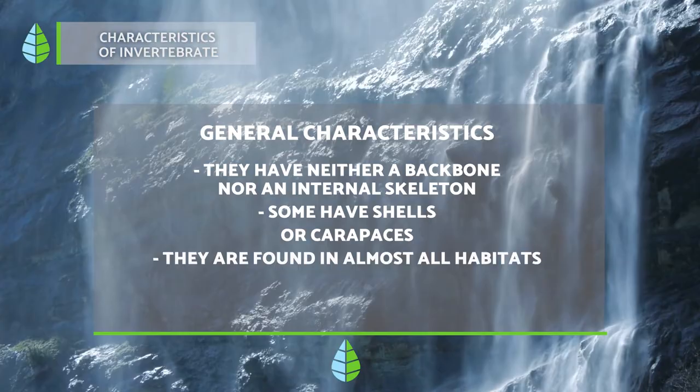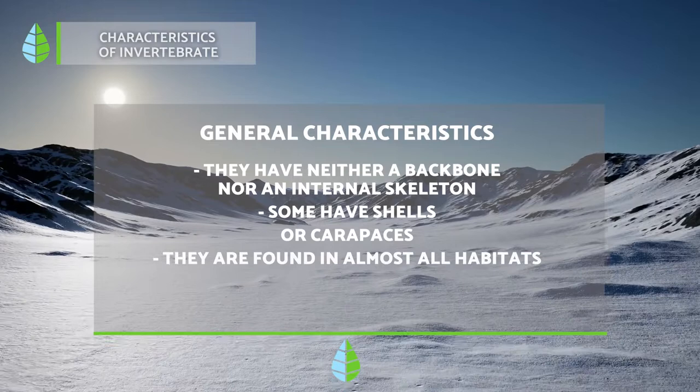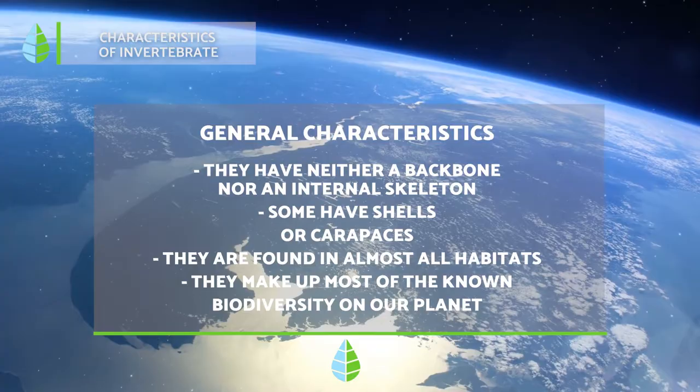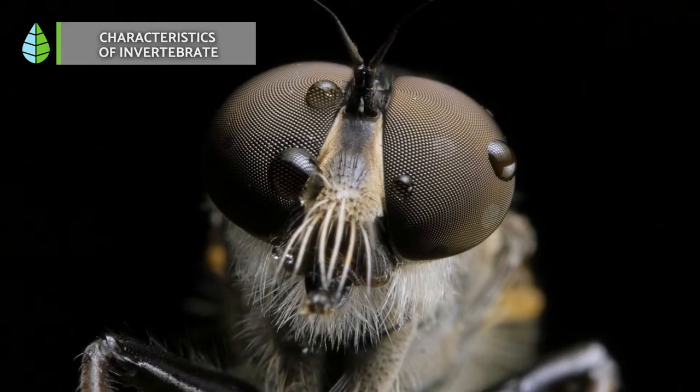Invertebrates make up most of the known biodiversity on our planet. There are two types of invertebrates: those with and those without body protection. Next we will discuss how invertebrates are classified as well as some of their most popular species.